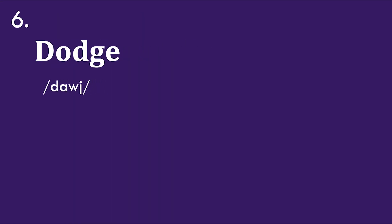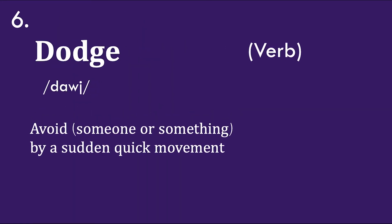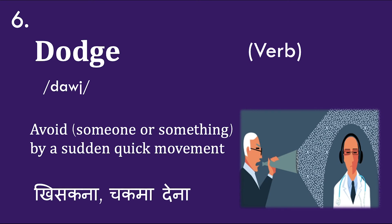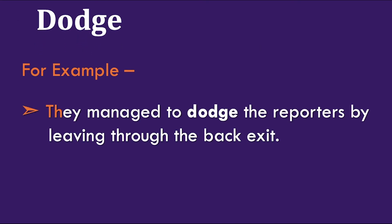The next word is 'dodge.' It means to avoid someone or something by a sudden quick movement. Example: 'They managed to dodge the reporters by leaving through the back.' So dodge means to quickly avoid something.